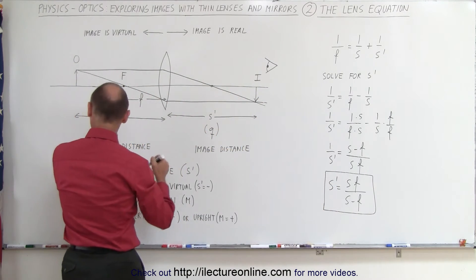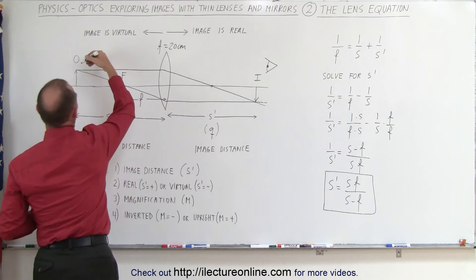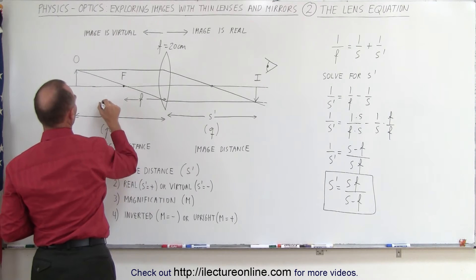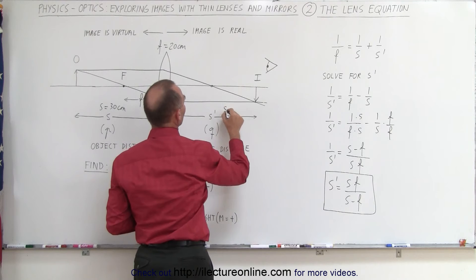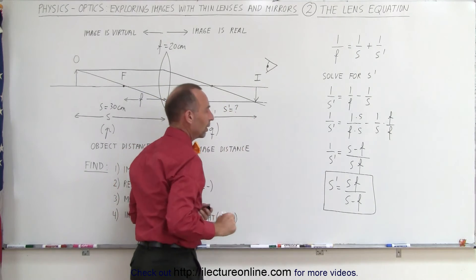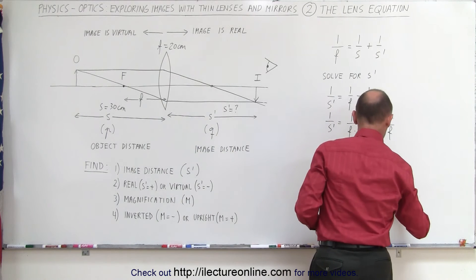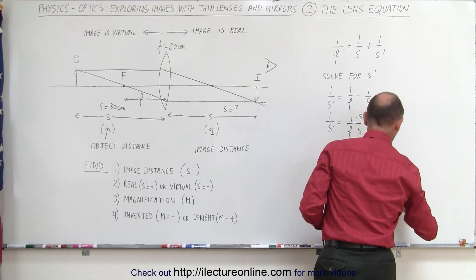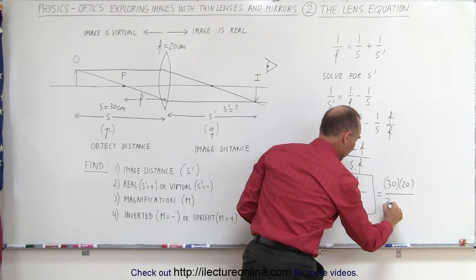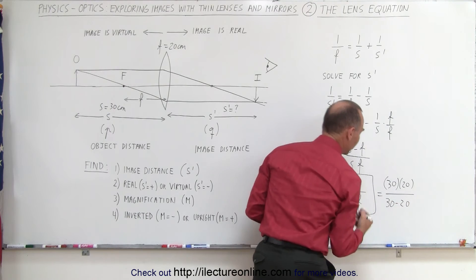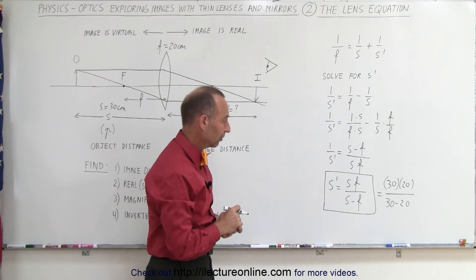For example, if we know that the focal length, let's say that the focal length is equal to 20 centimeters. And let's say that object distance S is equal to 30 centimeters and we want to know what S prime is equal to using this equation. We say, okay, let's plug in the numbers. S we said was 30, F was 20 divided by 30 minus 20. Let me move out of the way here so you can see what I'm doing. 30 minus 20. So I'm simply plugging in values for the distance to the object S and the focal length F.